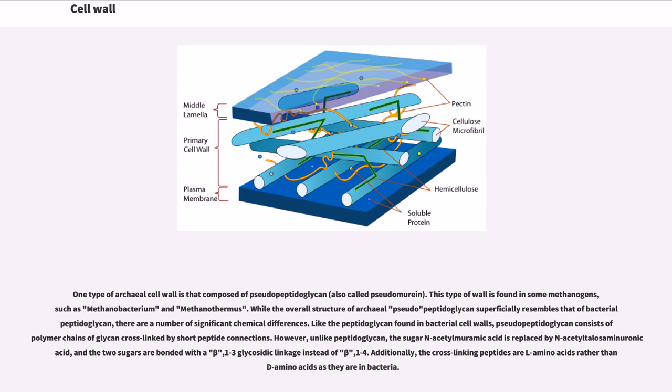Like the peptidoglycan found in bacterial cell walls, pseudopeptidoglycan consists of polymer chains of glycan cross-linked by short peptide connections. However, unlike peptidoglycan, the sugar N-acetylmuramic acid is replaced by N-acetyltalosaminuronic acid, and the two sugars are bonded with a beta-1,3 glycosidic linkage instead of beta-1,4. Additionally, the cross-linking peptides are L-amino acids rather than D-amino acids as they are in bacteria.